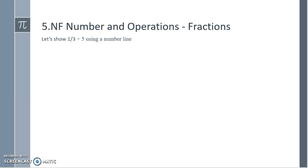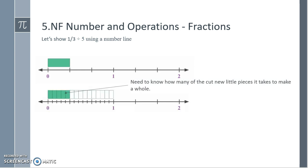Let's show 1 third divided by 5 using a number line. Here is our number line. I have from 0 to 1 marked off in 3 different pieces, so the piece that we see is the 1 third. Now we need to take 1 third and divide that into 5 pieces. We need to know how many of the new little pieces it takes to make a whole. I see that it takes 15 of them. Therefore, 1 third divided by 5 is 1 15th.